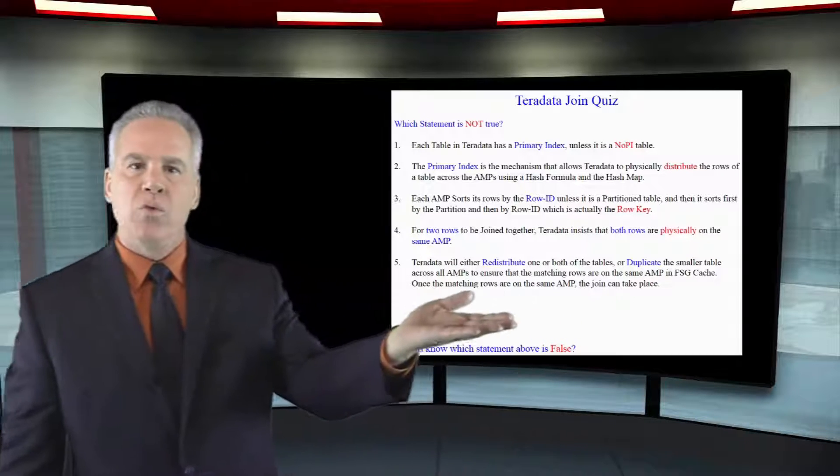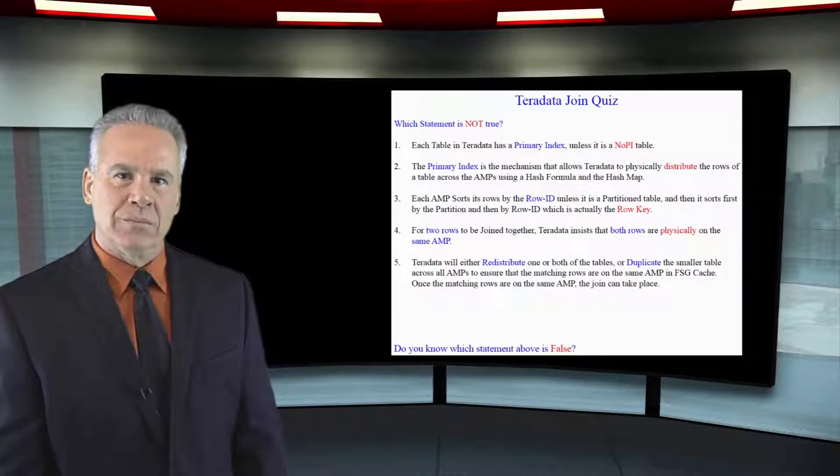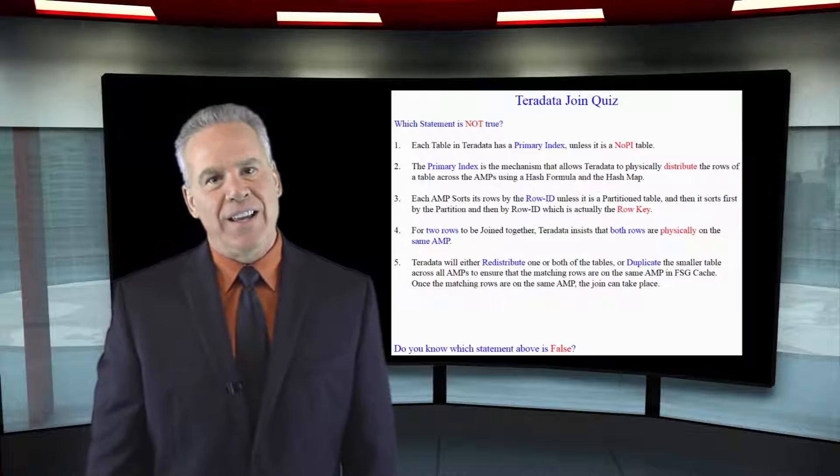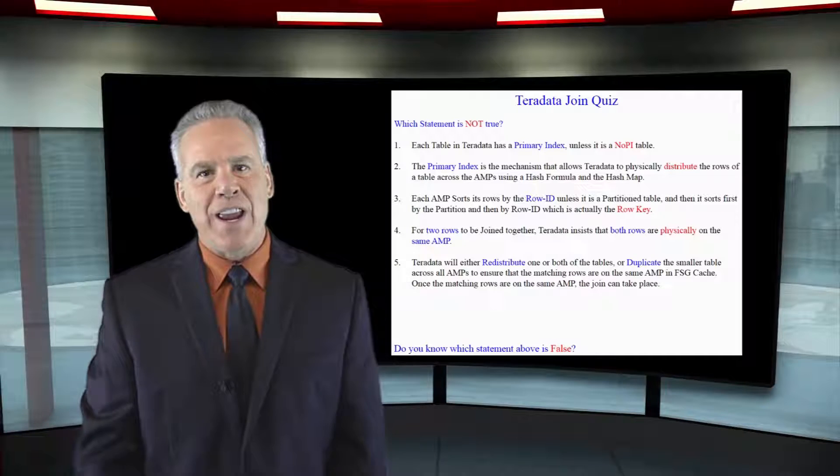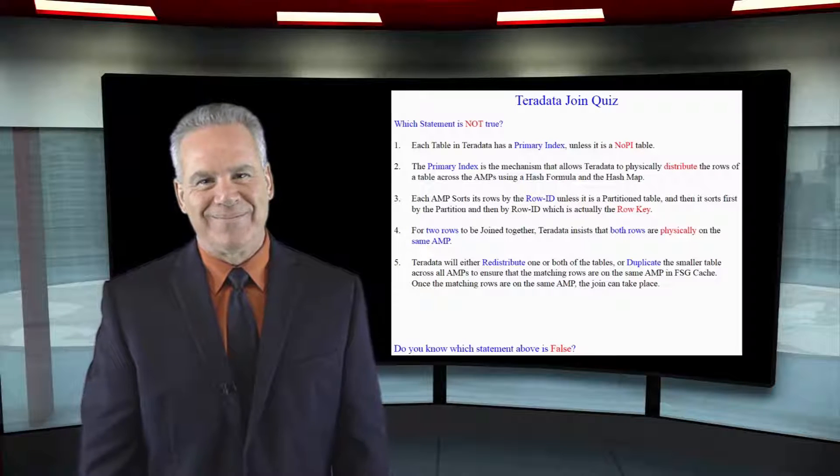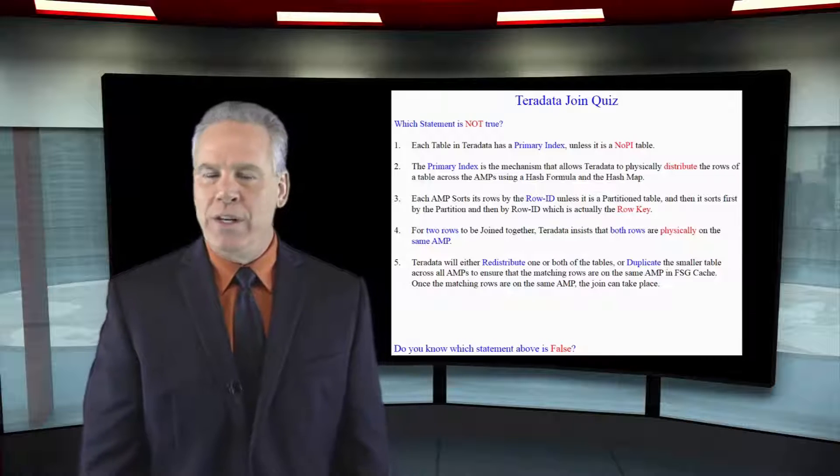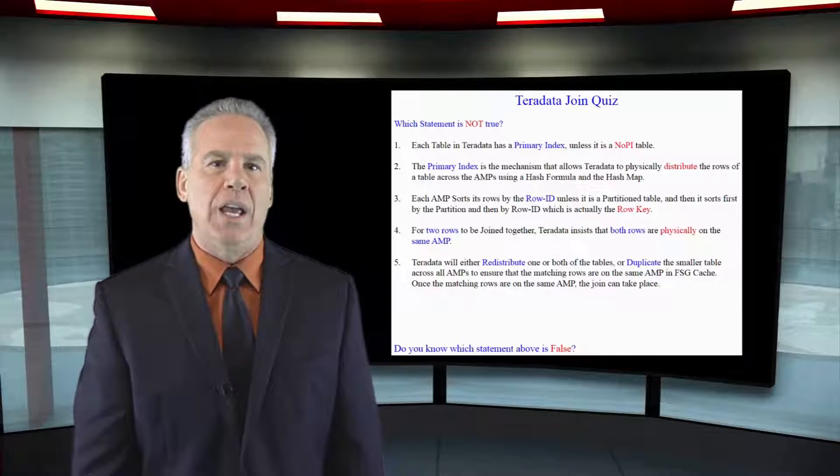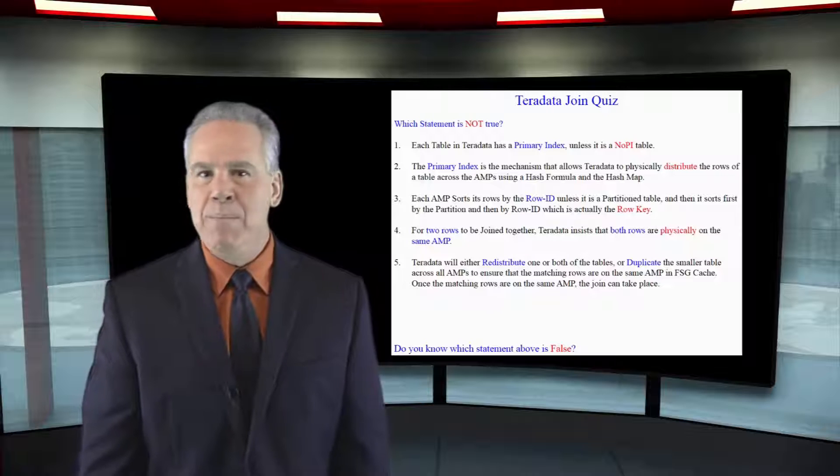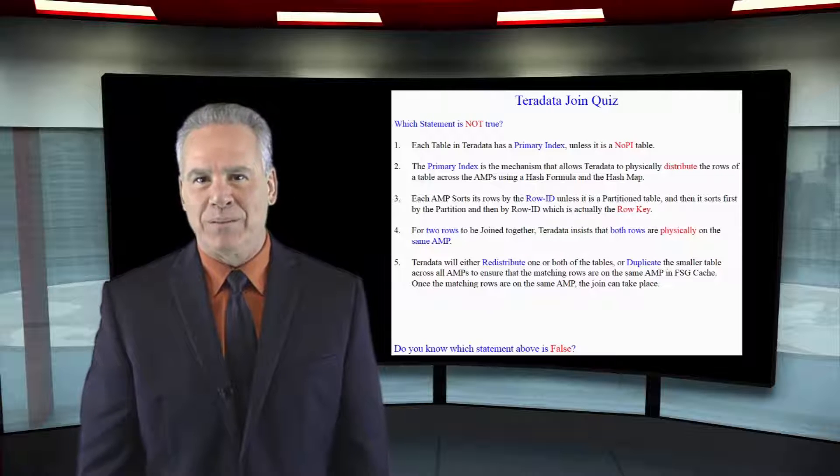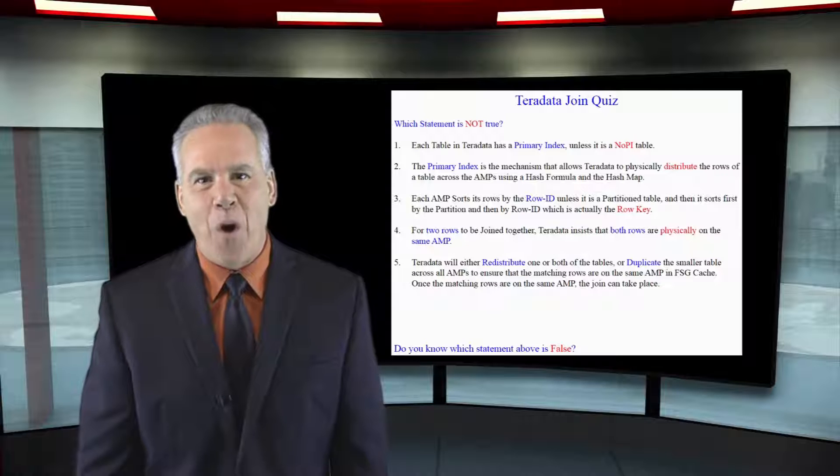For two rows to be joined together, they must physically be on the same amp. And Teradata will either redistribute or duplicate the smaller table in memory to make that happen. Which one of them is false?